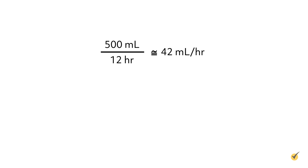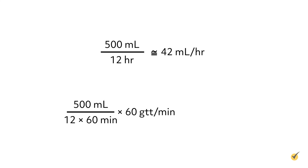Here's a tip: when the IV tubing is micro drip — 60 drops per milliliter — the drops per minute will be the same as the milliliters per hour. For example, you have 500 milliliters to infuse over 12 hours with a micro drip set. The total volume, 500 milliliters, divided by 12 hours equals 41.6, rounded to 42 milliliters per hour. The drops per minute, calculated as total volume divided by time in minutes multiplied by the drop factor of 60, also equals 41.6, rounded to 42 drops per minute.